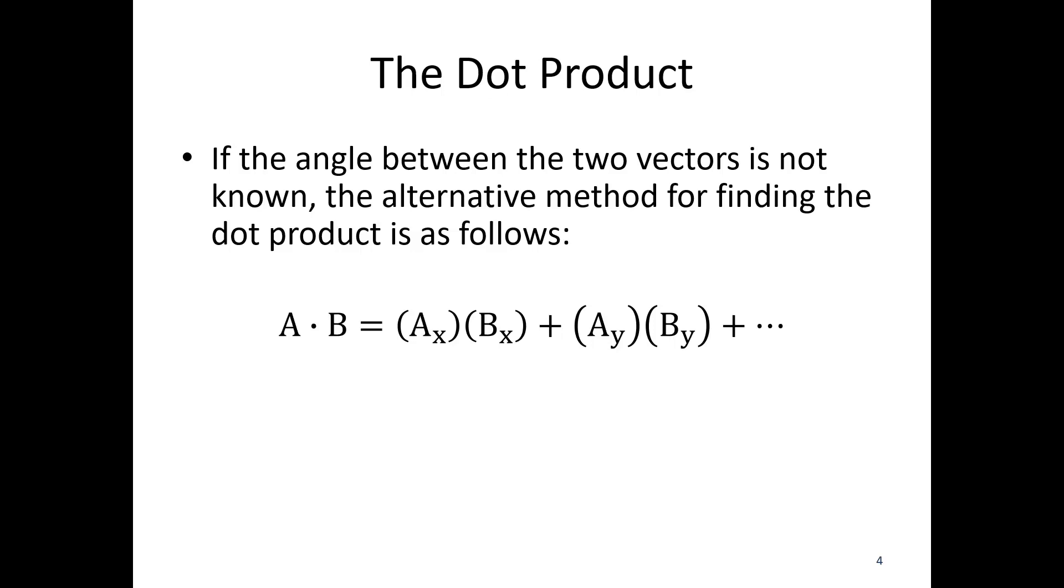I would do ax times bx. So the two x components, multiply those together. Ay times by, multiply those two components together. And if I have z, az times bz, multiply those two components together. And so then I'm going to add this product, this product, and if I have a third one, I'm going to add that third product.